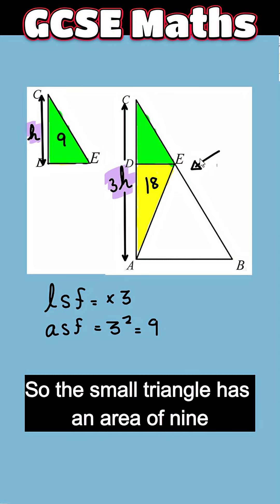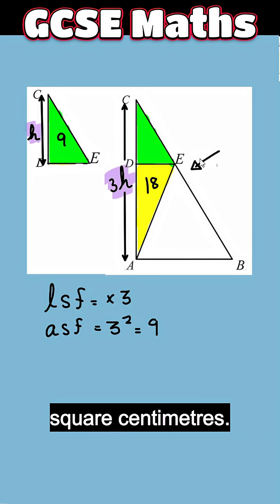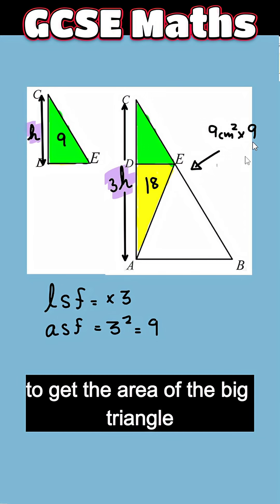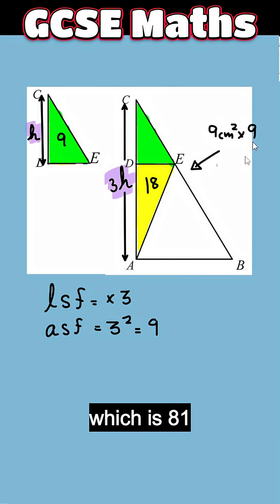So the small triangle has an area of 9 square centimeters. So we need to multiply that one by 9 to get the area of the big triangle which is 81 centimeter square.